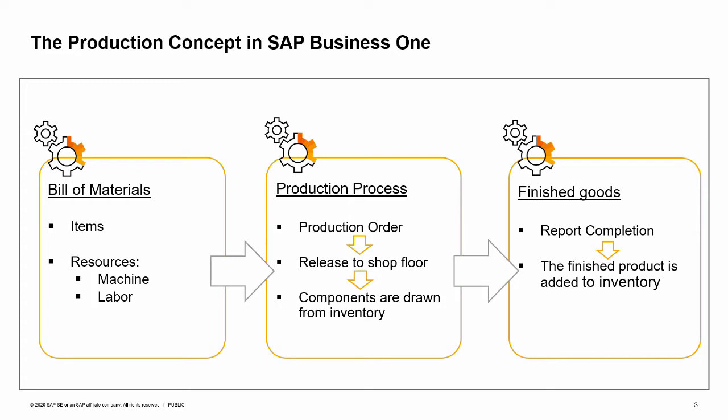Then, to start the production process, we issue a production order document based on the bill of materials, and release the components from the warehouse to the shop floor. When the production process is completed, the finished product is added to inventory.